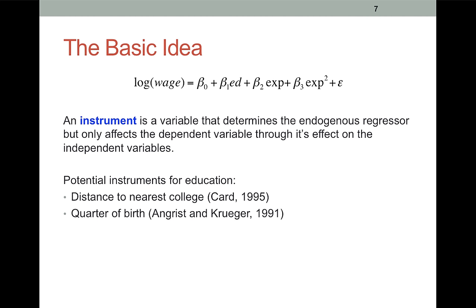Now, an instrument, we're going to define as a variable that determines the endogenous regressor. In this case, that's education. The instrument determines the endogenous regressor, but it only affects the dependent variable through its effect on the independent variables. When we say it only affects the dependent variable through its effect on the independent variables, what we're saying is that Z, which is what I'm going to use as notation for an instrument when I don't want to talk about a particular instrument, we're saying Z is independent of the error term. It only affects wages. So here, we're saying our instrument, whatever instrument we choose, it can only affect wages through its effect either on education or experience.